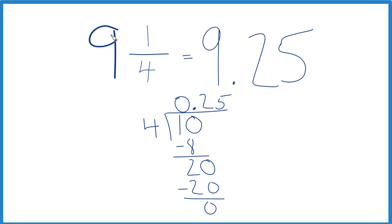So 9 plus 0.25 gives you 9.25. So in answer to our question, the fraction 9 and 1/4 equals the decimal 9.25.